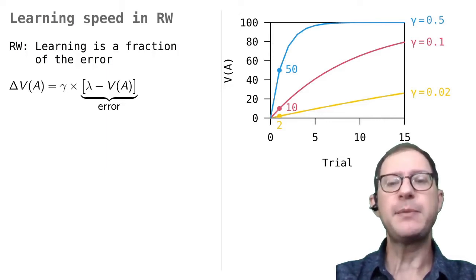Another way of saying the same thing is that when gamma is 0.5, then 50% of the error is corrected with each experience. When gamma is 0.1, then 10% of the error is corrected, and when gamma is 0.02, only 2% of the error is corrected. Across many experiences, this means that the curve with gamma at 0.5 rises faster, and the others more slowly. All of the curves will eventually get close to 100, but will do so at different speeds.